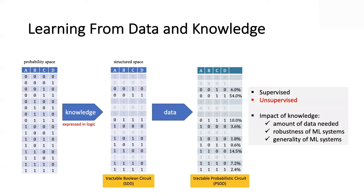Let me start with a high-level motivation about what we mean by learning from data and knowledge. This is a holy grail in AI with a lot of interest. In this lecture, we are learning probability distributions. When learning a probability distribution, there is usually a probability space — a set of variables representing your domain. Those variables define a set of possibilities, or variable instantiations. With four binary variables, there are 16 possible instantiations, or 16 possible states of the world.